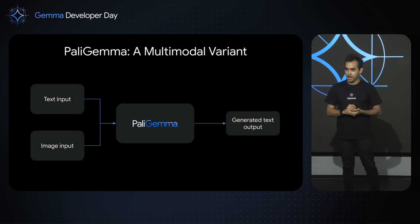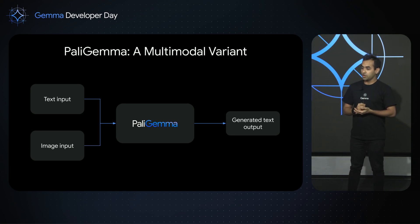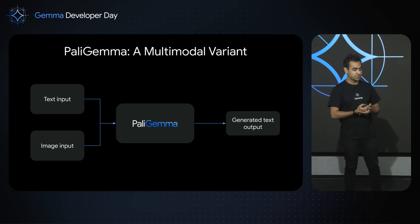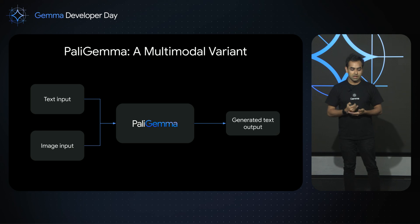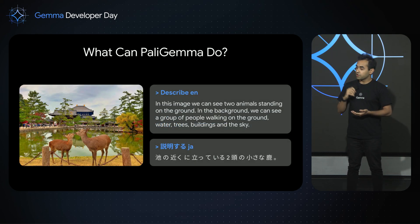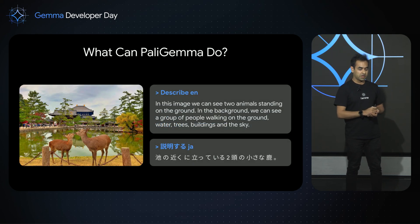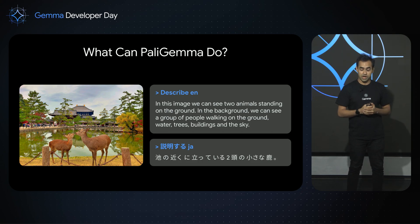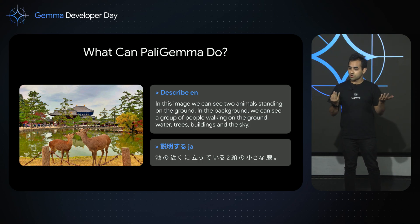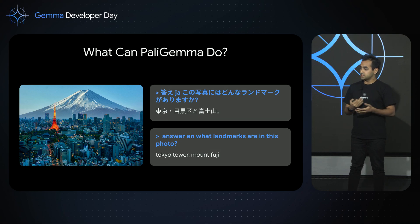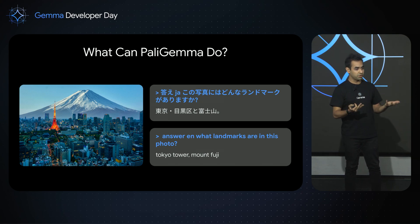So what is PaliGemma? PaliGemma is a single model that takes in both text and image input in order to culminate into a final text output that can solve not only natural language processing tasks that you might expect, but also computer vision tasks. For example, you can ask it to take a picture from Nara Park here in Japan and describe the image. You can ask it in English with EN or in Japanese with JA, and it will give you a description of the image. Or you can ask it a question about what's in the image — here you can see it look at an image of Tokyo and identify not only Mount Fuji but also the Tokyo Tower.